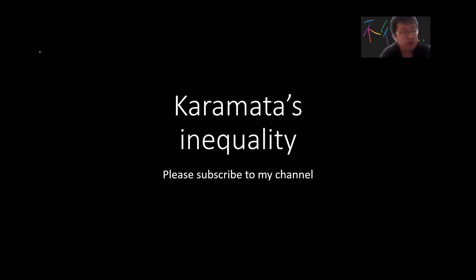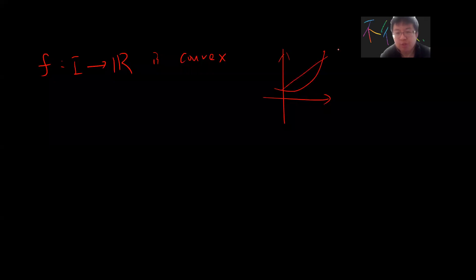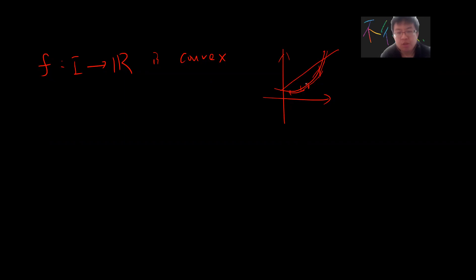So Karamata's inequality starts from a convex function on some open interval. Convexity means, simply speaking, that the slope is increasing — take any two points and the slope is increasing. Another statement is that the tangent line is always above the curve. If you further assume f is twice differentiable, then you can just say f double prime is greater than zero.